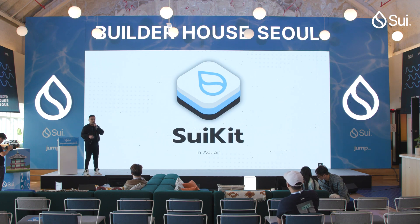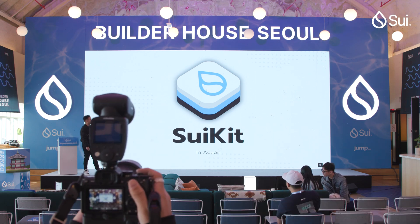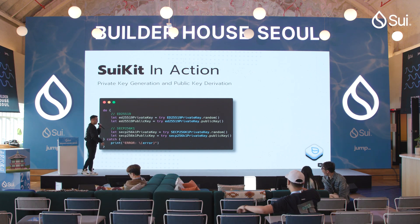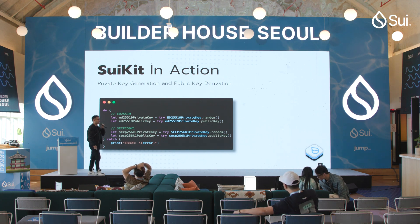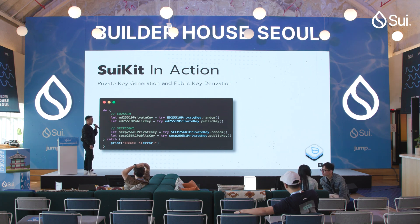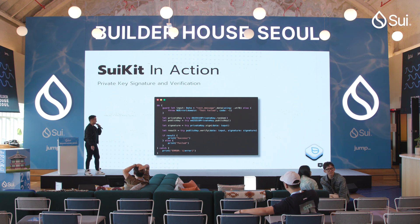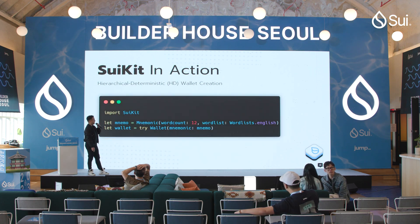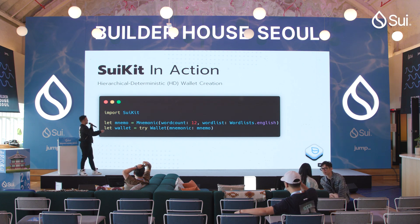I'm going to walk through this briefly — bear with me, this is showing you code. Similarly to the TypeScript SDK, you can derive a mnemonic, create a private key from it — either Ed25519 or secp256k1. You can also sign transactions with that private key, just like any other SDK. And you can create an HD wallet — it's as simple as two lines of code. Using this, you can build your own wallet — just add a wrapper UI and some extra features to it.